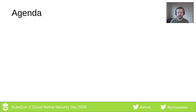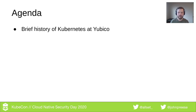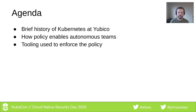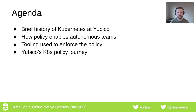Let's go over what we're going to be discussing today. First, we'll start with a brief history of Kubernetes at Yubico — how we got started and some of the previous gaps in our Kubernetes tech stack. We'll discuss how policy helps address those gaps, cover the open source tooling that enables us to enforce these policies, and wrap up with our journey thus far and where we see ourselves in the future. There will also be time at the end for questions.